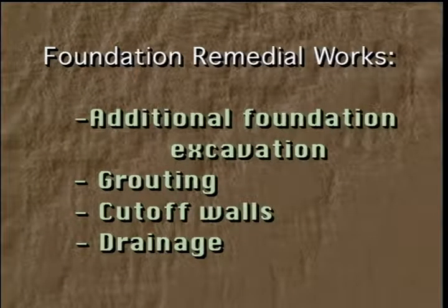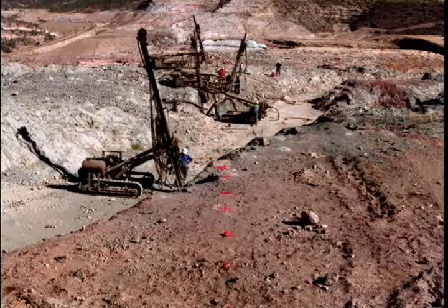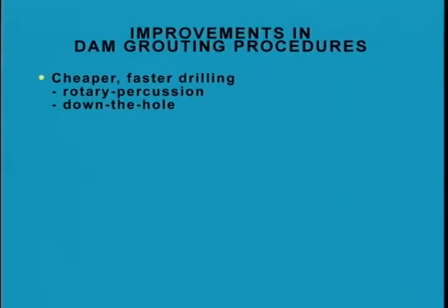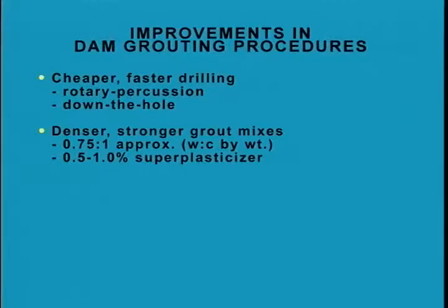The second remedial work is consolidation and curtain grouting. Grouting is no stranger to any dam engineer or geologist, as it is done at every modern dam site. Drill holes for grouting are now made in the majority of cases with rotary percussion drills rather than with rotary diamond drills — advance rates are up to five times faster at similar lower cost. Down-the-hole drills of three-inch and four-inch diameters have been used on a number of projects. Grout mixes of neat cement or cement with bentonite additives have now been mostly replaced by thicker, more dense grout mixtures of around 0.75 to 1 water-to-cement by weight, with about 1.5 to 1% of super plasticizer to reduce viscosity and yield point.